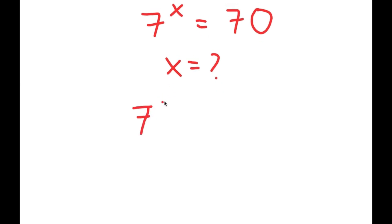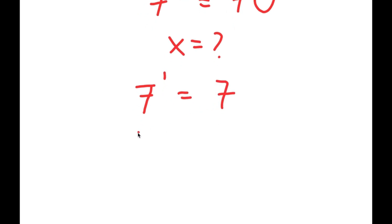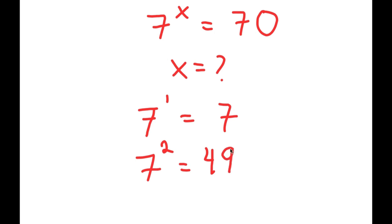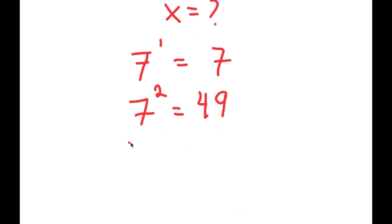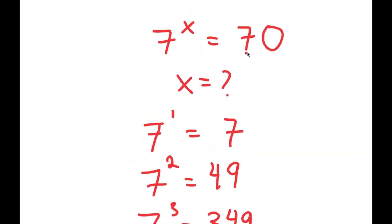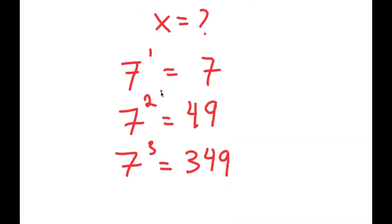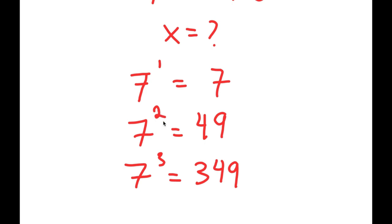Let's try to plug in a number. Starting with 1: 7 to the power of 1 is equal to 7. Going higher, 7 to the power of 2 is equal to 49. And 7 to the power of 3 is equal to 349. So we're trying to find what value of x gives 7^x = 70, but even x=3 results in a number much higher than 70, meaning x is going to be a decimal somewhere between 2 and 3.